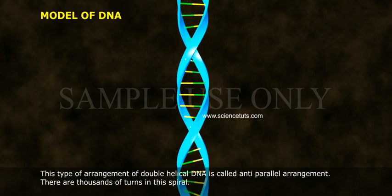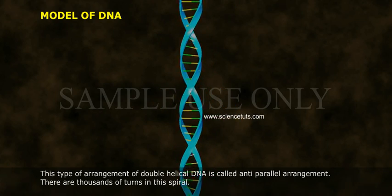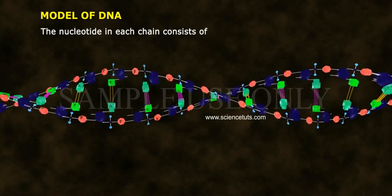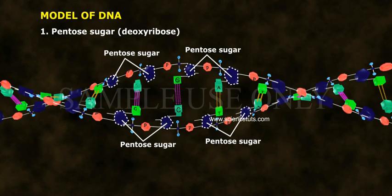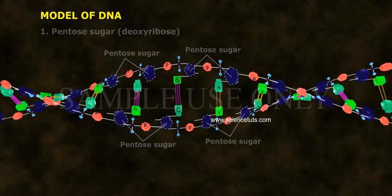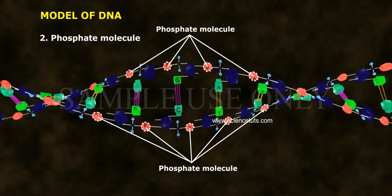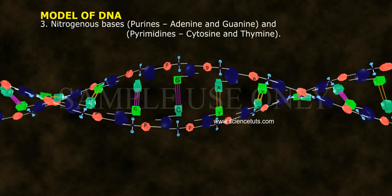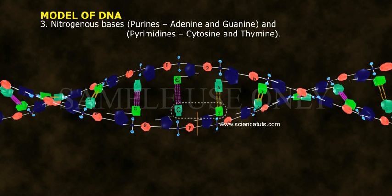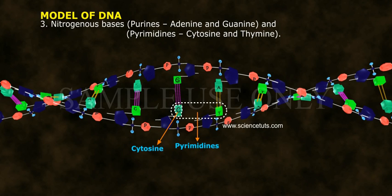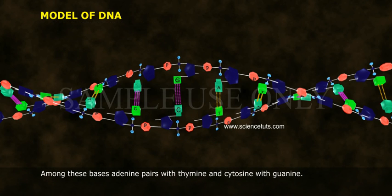There are thousands of turns in this spiral. The nucleotide in each chain consists of: 1. Pentose sugar, deoxyribose; 2. Phosphate molecule; 3. Nitrogenous bases — purines: adenine and guanine, and pyrimidines: cytosine and thymine.